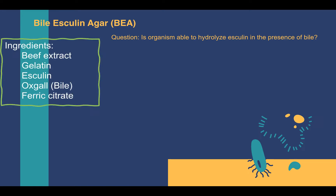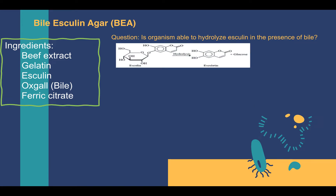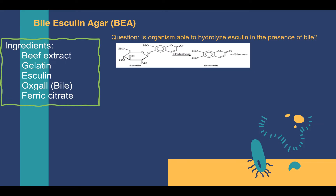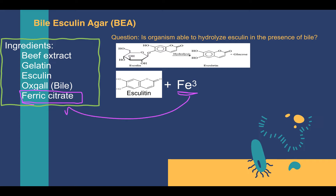Let's take a look at the ingredients. There is beef extract and gelatin, which serve as nutrient sources. The medium also contains esculin — we're looking at whether the organism can utilize this esculin. To do so, it must possess the enzyme esculinase. If the organism has esculinase, it will break down the esculin into esculatin. The other ingredient is ox gall, which is the source of bile. If the organism breaks down the esculin in the presence of bile, the esculatin produced will react with ferric citrate (Fe3+) also in the medium, resulting in a dark brown precipitate.